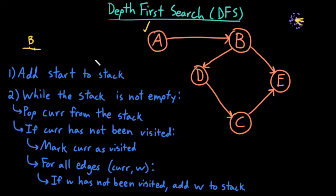While the stack is not empty, pop the current node from the top of the stack — that's B. If my current node has not been visited, mark it as visited. B has two edges: D and E. I'll break ties using alphabetical order, so I iterate over D before E. D has not been visited, so I add it to the stack. E has not been visited, so I add it to the stack as well.